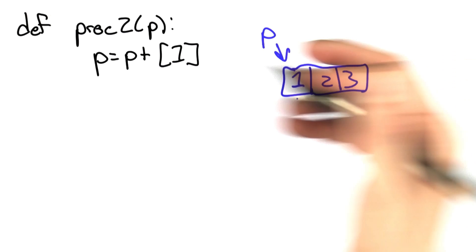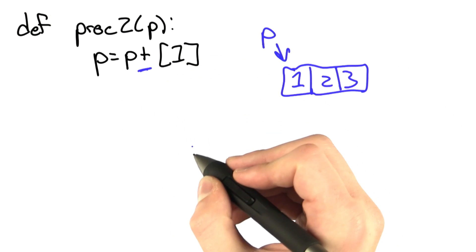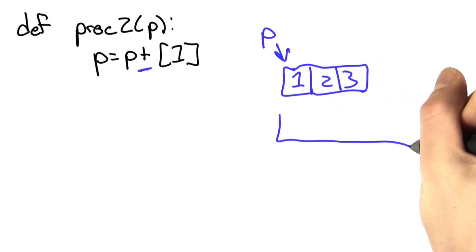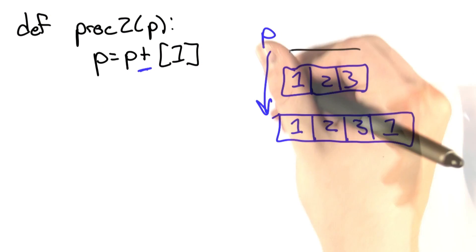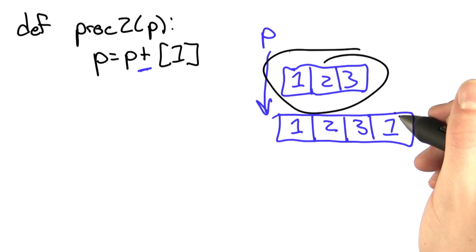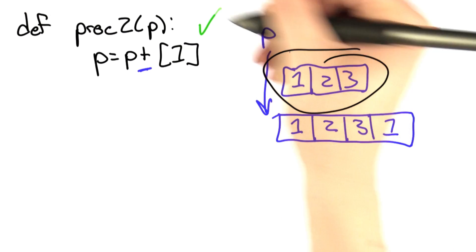This is going to create a new list because that's what the plus operator does with lists. We're going to create a new list, and now p points to this. We don't do anything with p, but most importantly, the original list has been left unchanged. The end result is that this is good.